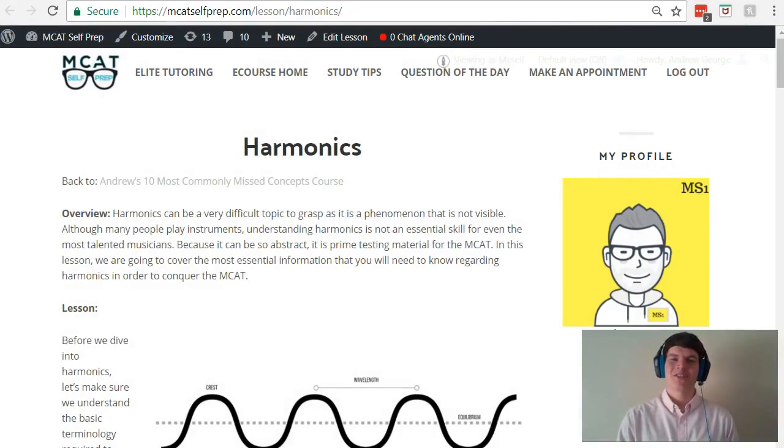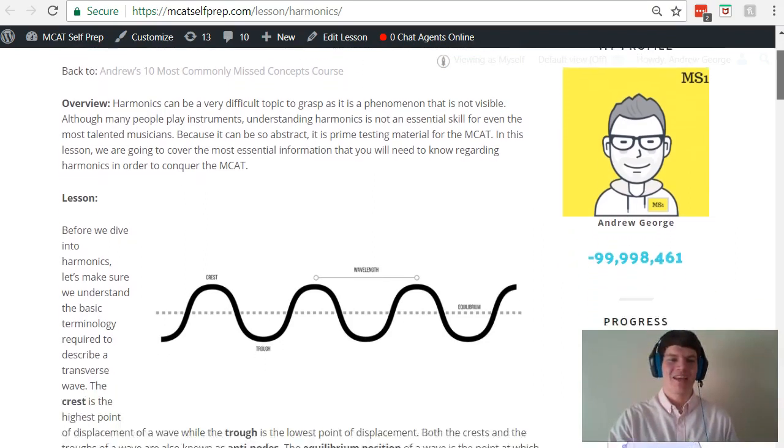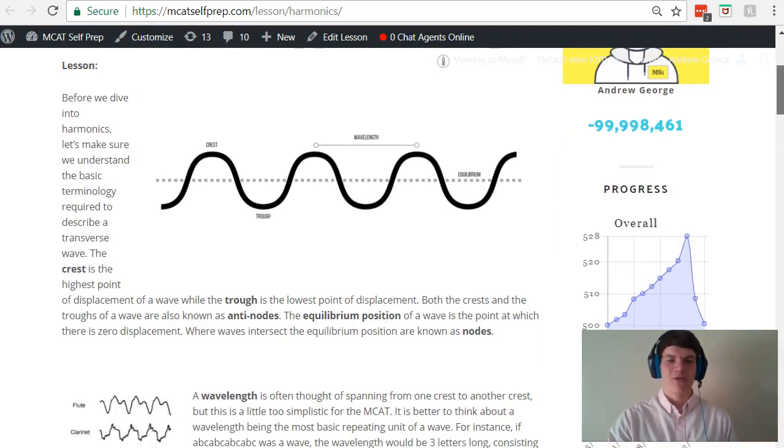To gain a better understanding of this question, let's take a look at the harmonics lesson from my 10 most commonly missed concepts course. In this course, I walk you through the 10 hardest concepts that are commonly tested on the MCAT. In this lesson, I walk you through not only what a wavelength is and how waves typically work, but I also walk you through open and closed pipes and how to memorize the equations for those and how to understand them on an intuitive level so that you don't miss practice questions on the MCAT.